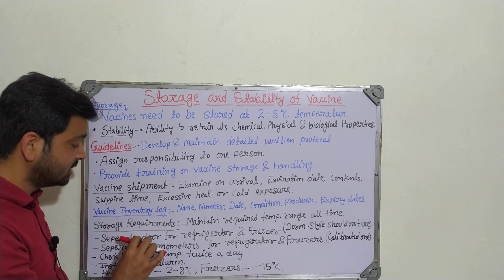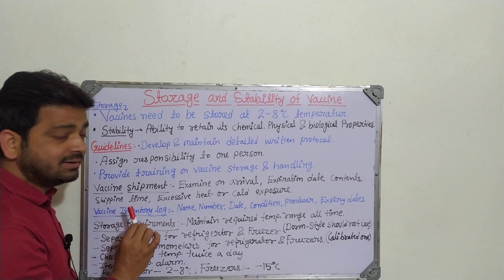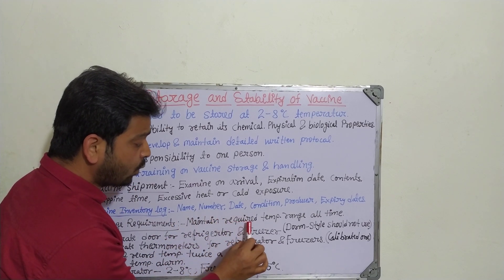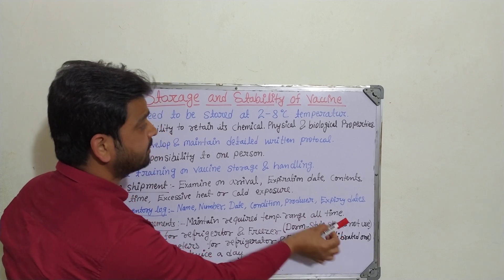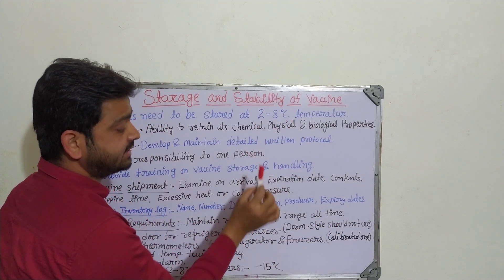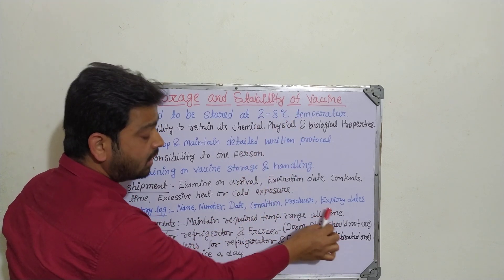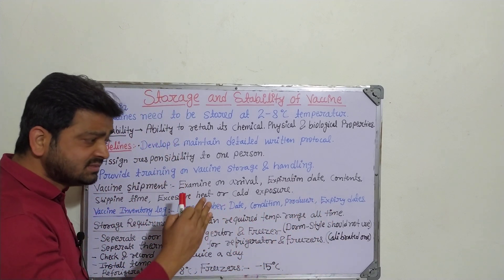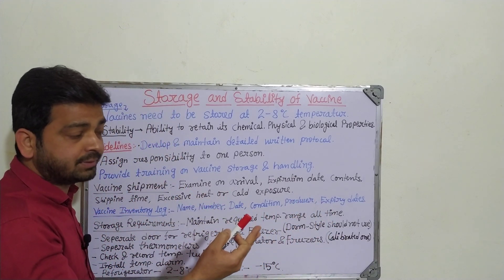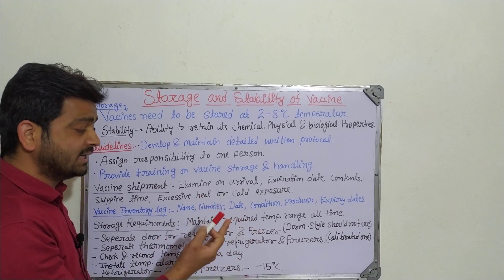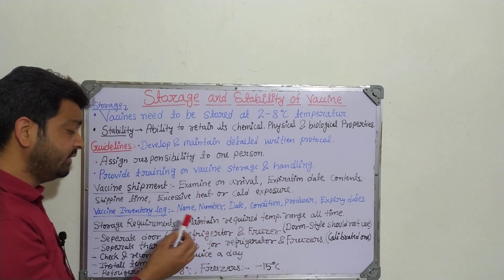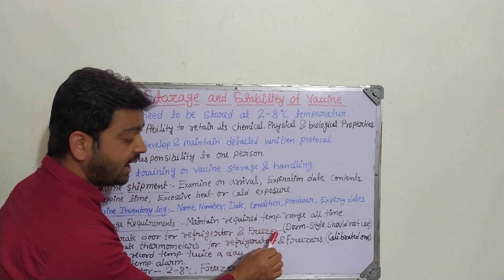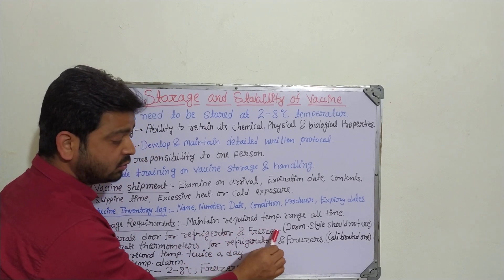For storage requirements after arrival from the manufacturer, we need to maintain the required temperature range at all times — for example, 2 to 8 degrees centigrade. That temperature must be maintained throughout the year until the vaccine is administered to the patient. We also need separate doors for the refrigerator and freezer.